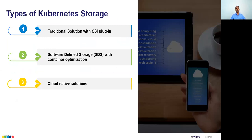CSI stands for Container Storage Interface, which is a standard defined by CNCF that every vendor must follow. Some of those 56 cloud-native storage solutions are essentially CSI plugins. The second category is software-defined storage with container optimization — they don't rely on a plugin but are optimized to work for containers. The third category is cloud-native solutions built ground-up for Kubernetes.